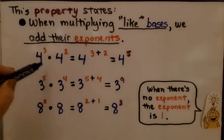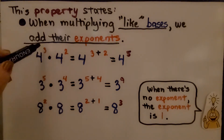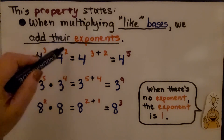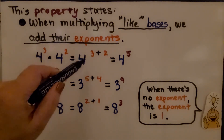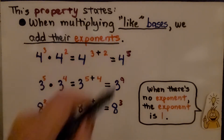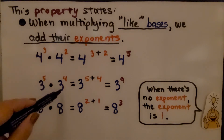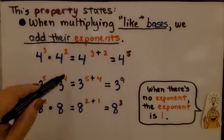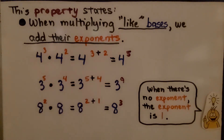We have 4 and 4, which are like bases. 4 raised to the third power multiplied by 4 raised to the second power — we just add their exponents because the bases are the same. We have 4 to the 3 plus 2, giving us 4 to the fifth power. Here we have 3 to the fifth power times 3 to the fourth power — same base, so we add the exponents: 3 to the 5 plus 4, which is 3 to the ninth power.